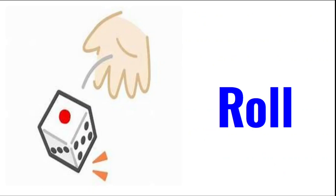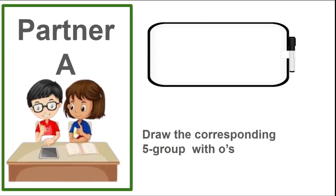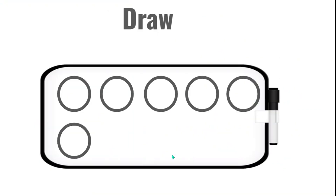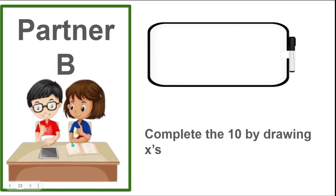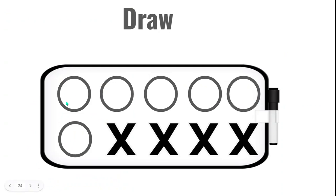Let's do another one. Roll, count how many dots are on the die. Partner A, draw that many circles the five-group way. Your drawing should look like this — I have five circles on top and I have one more at the bottom. Five and one more is six. Partner B, draw X's until you have 10 objects on your board. Does your drawing look like this? Here is partner A's drawing and here is partner B's drawing.